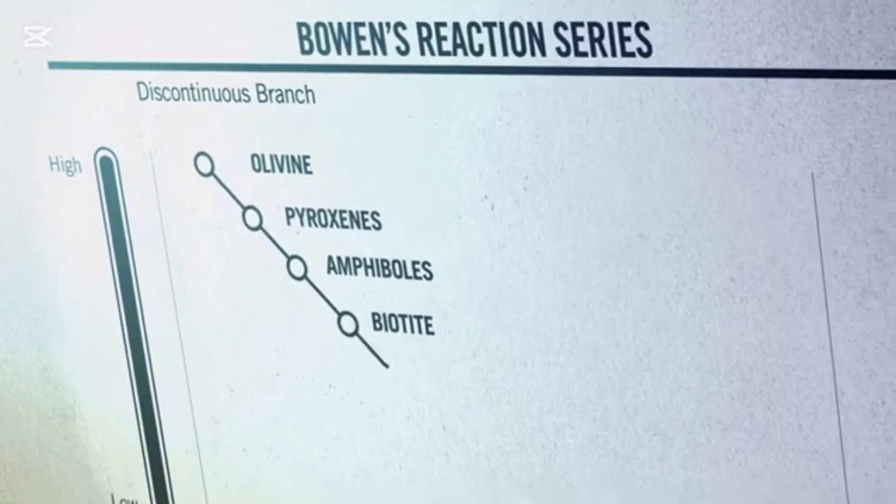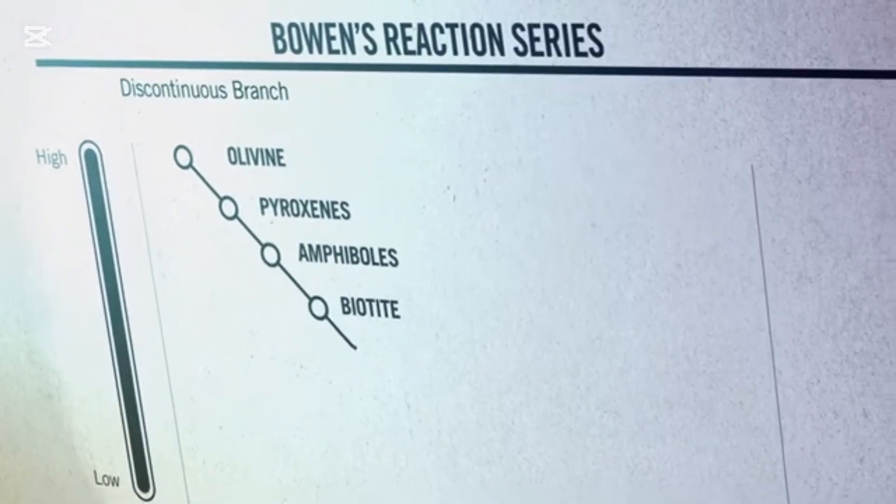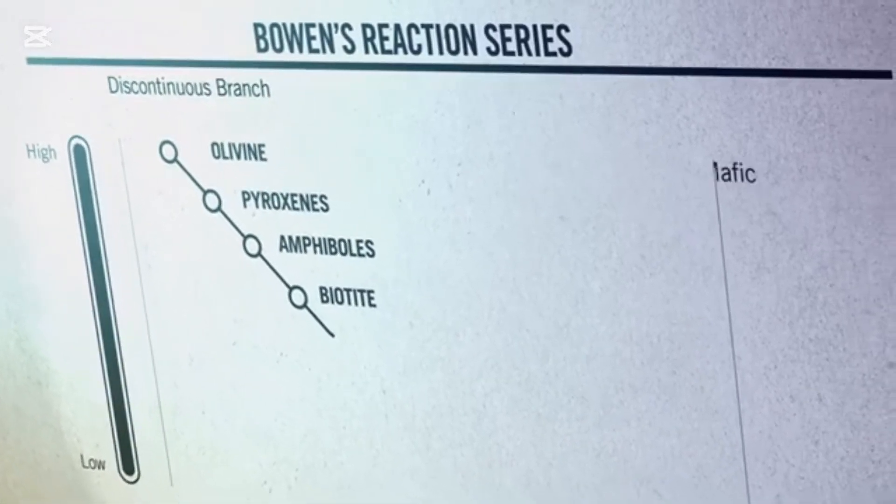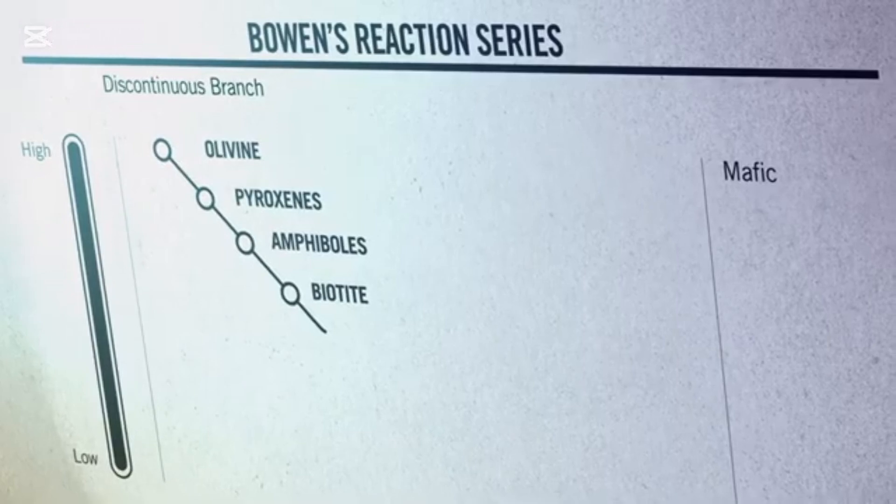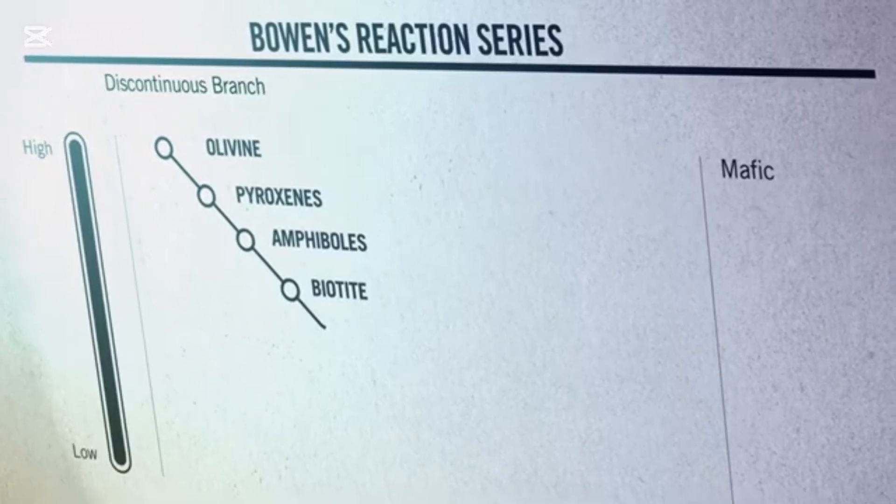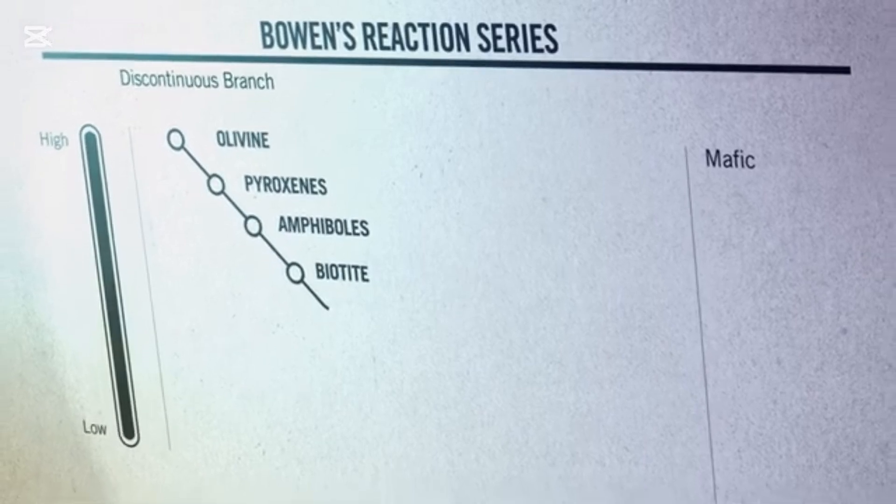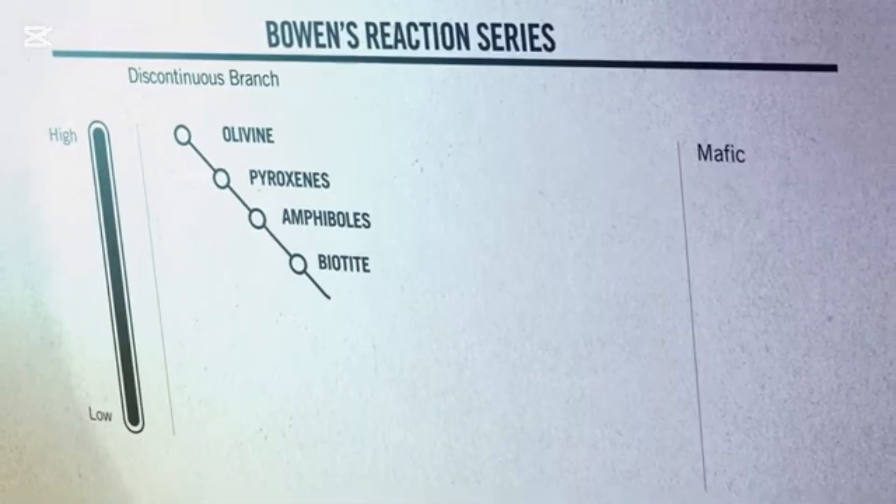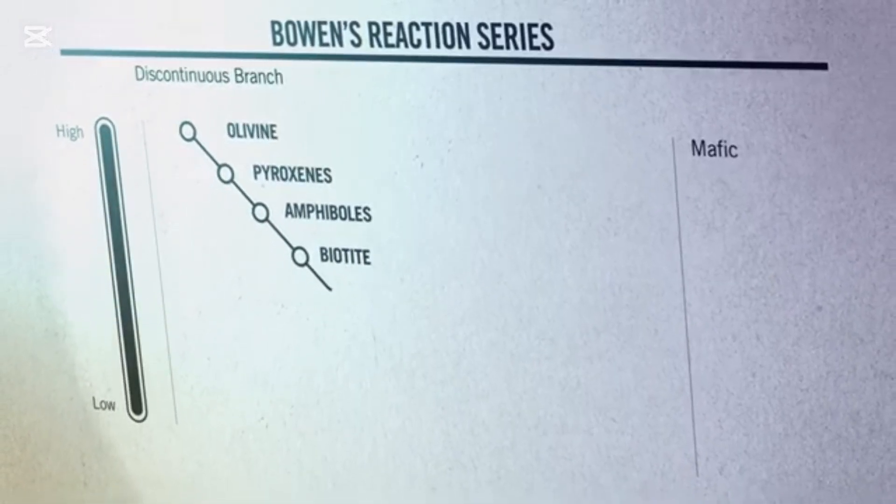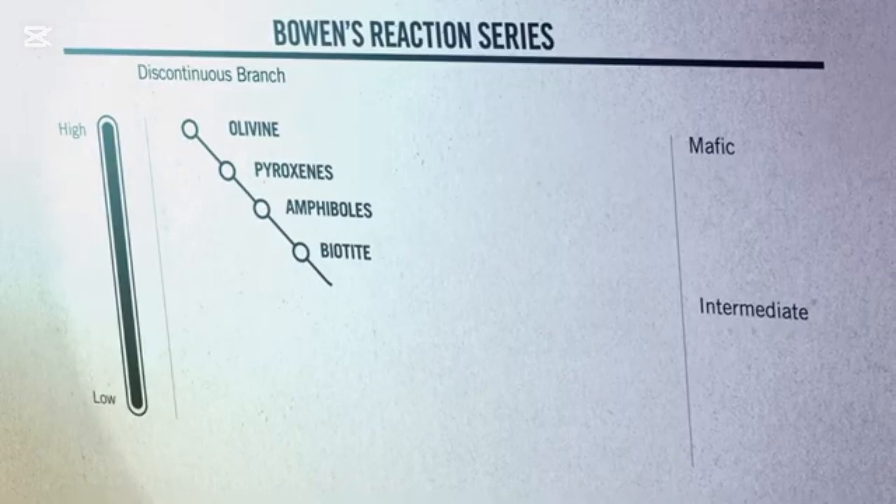The minerals that form first, at the highest temperatures of Bowen's discontinuous branch, are iron and magnesium-rich, what geologists call mafic minerals. As temperatures decrease, less and less iron and magnesium are available in the melt to make minerals like amphiboles and biotite. Instead, elements like aluminum, sodium, and potassium are available in the melt to make what geologists call intermediate minerals.